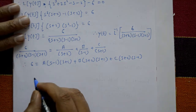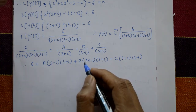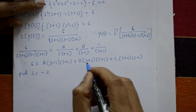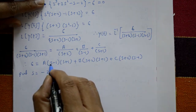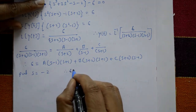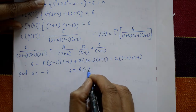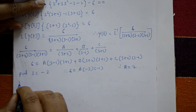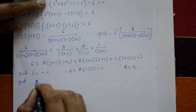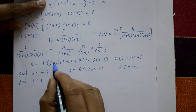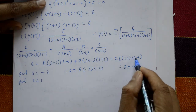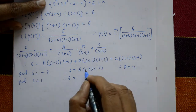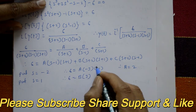Putting s = -2: 6 = A·(-3)·(-1), so A = 2. Putting s = 1: 6 = B·3·2, so B = 1.